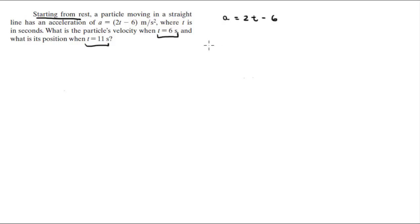When they give you the acceleration and you want to find the velocity, all you got to do is the integral of the acceleration with respect to time is equal to the velocity, which is equal to the integral of 2t minus 6 with respect to time.